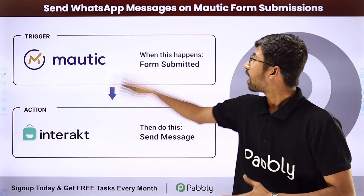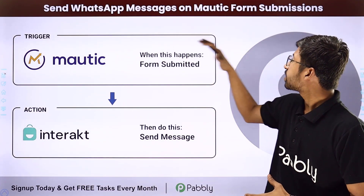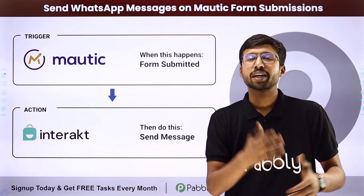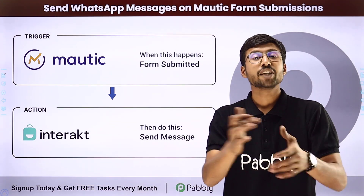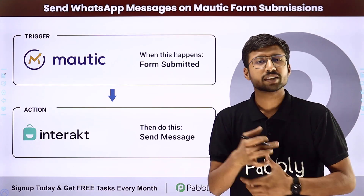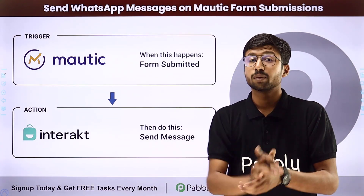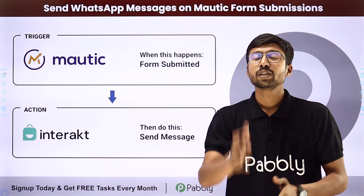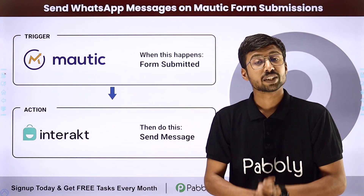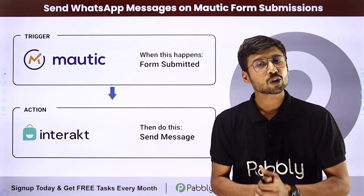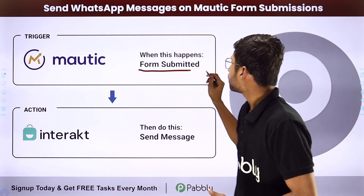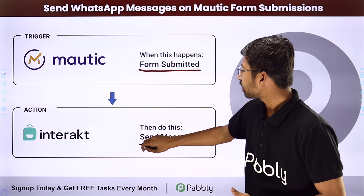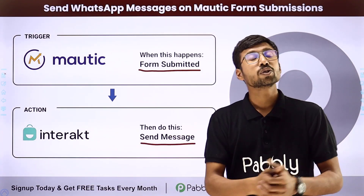In this video, we are going to learn how to send WhatsApp messages on Mautic form submission. Suppose you have created some kind of form using Mautic and shared it with your users. Whenever a user fills the form and submits it, you want to send them a WhatsApp message. The trigger of this automation will be a new form submission in Mautic, and the action will be sending the WhatsApp message to that user using Interact.